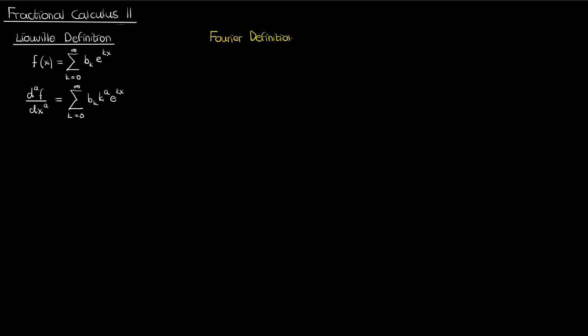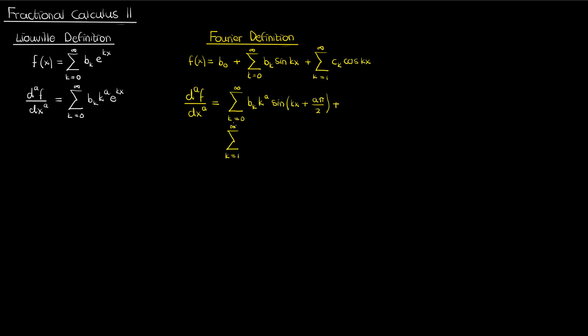The next definition we talked about in the last video was the Fourier definition. If I have a function f of x defined as a sum of sines and cosines, then the fractional derivative of f of order a will also be a sum of sines and cosines but with two wrinkles. The first is that the coefficient of x will come out with a power of a. The second wrinkle is that the sines and cosines will be phase shifted by a times pi over 2. For the ath derivative, sine and cosine are shifted by a times pi over 2.